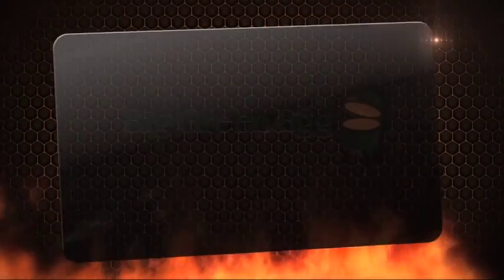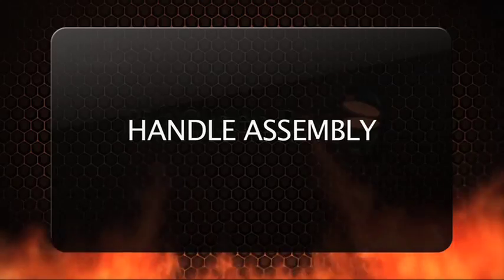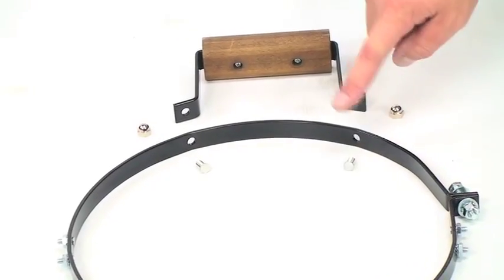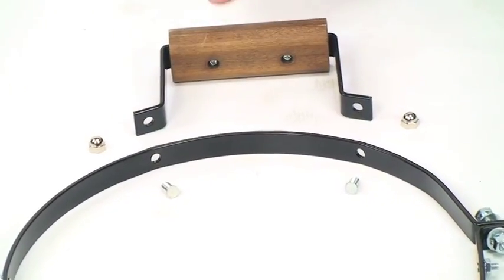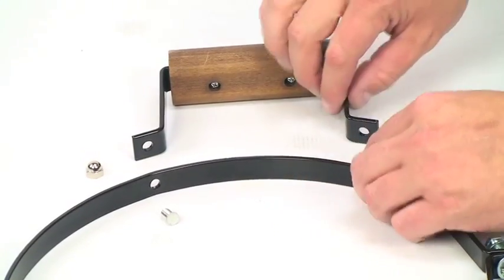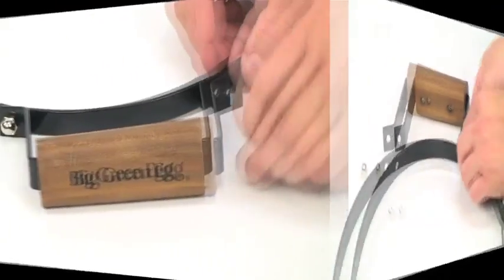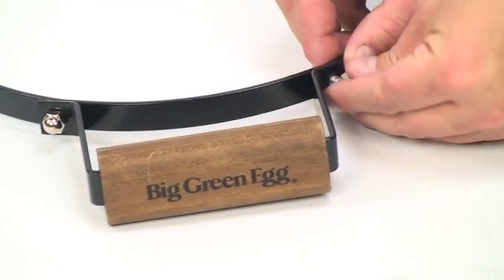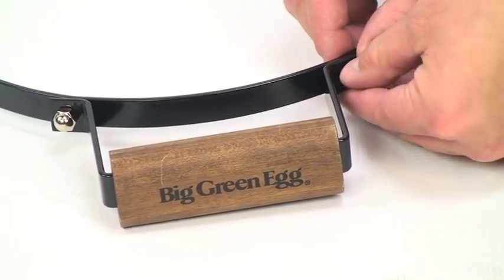You are now ready to attach the handle. Insert the quarter inch by half inch clinch studs in holes eleven and twelve on the upper band. Then attach the handle. Make sure the logo can be read correctly when you spin the band around. Now place a 7/16 acorn nut on each stud and hand tighten.